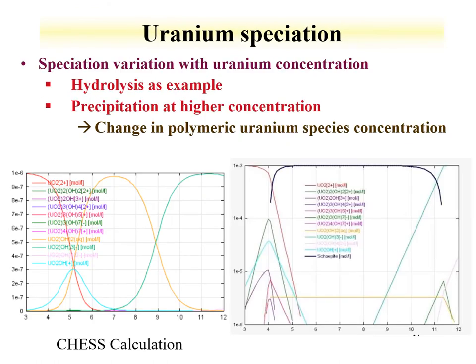Thermodynamic data for the uranyl species are available. In a simple system with total uranium at 1×10⁻⁶ mol/L, above pH 4 the free uranium begins to disappear. Around neutral pH, speciation is dominated by the dihydroxide, and at higher pH the trihydroxide anion forms. At higher uranium concentrations, between pH 4.5 and about pH 11, schoepite—the hydroxide precipitate of uranium—dominates. These speciation calculations were performed with CHESS, as explained in the speciation section of the radiochemistry course.